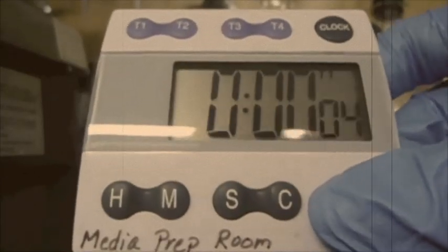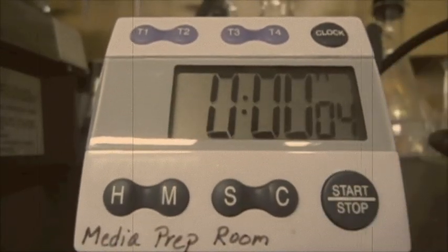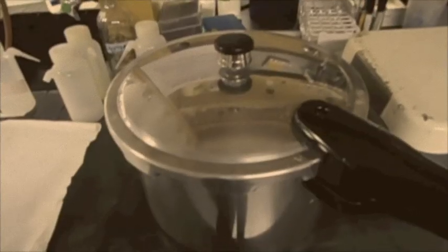After 30 minutes, your solution will be sterilized. Remember to always use heat gloves when removing your beaker from the pressure cooker.